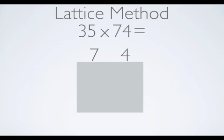We label the box by our dimensions in the multiplication problem. 74 will go across the top with the largest place value near the left. 35 will go along the side with the largest place value near the top.